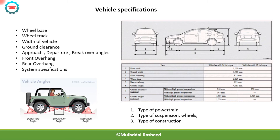The basic specifications include: wheelbase, wheel track, width, height and length of the vehicle, ground clearance, approach angle, departure angle, brake over angle, front overhang, rear overhang, and the generic system specifications — that is, the type of powertrain, type of suspension, wheels, type of construction, etc.